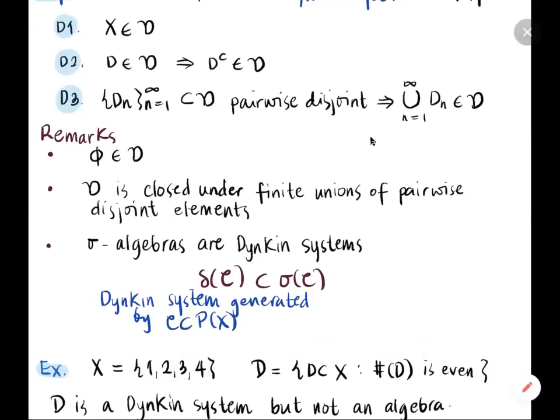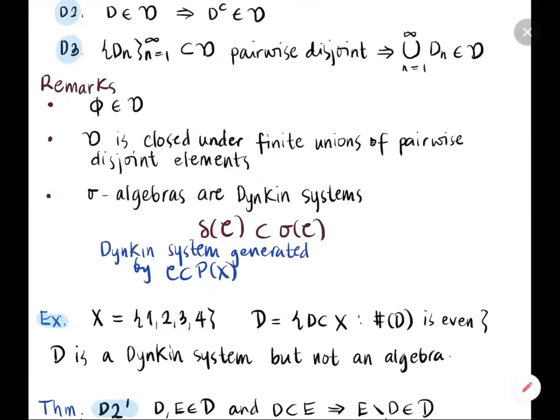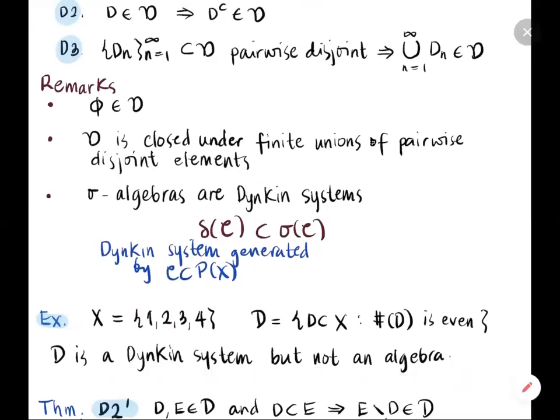So D is a Dynkin system, but not an algebra. To see this, it suffices to show it is not closed under intersection. Take A = {1, 2} and B = {2, 4}; these have even numbers of elements. But their intersection is the singleton {2}, which has only one — an odd number of elements — so it is not in D. This implies D is also not a sigma algebra.